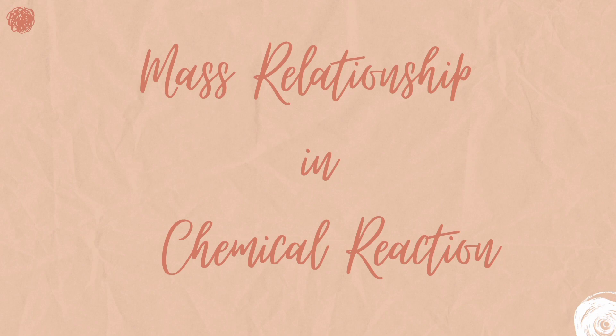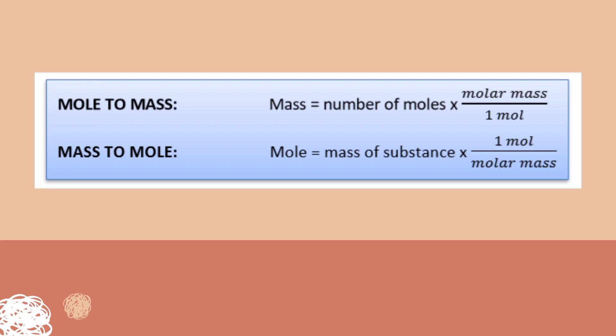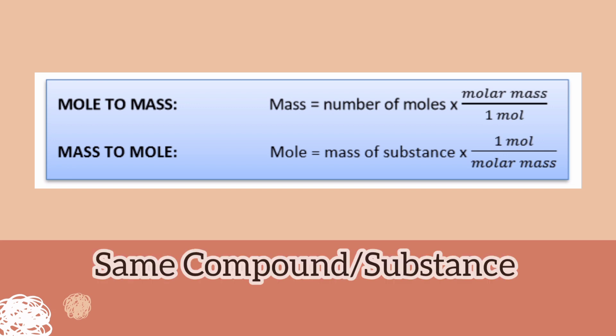Next, we have mass relationships in chemical reactions. We have what we call mole-to-mass conversion and mass-to-mole conversion, and in both we use the molar mass of the substance. For mole-to-mass, we multiply the number of moles by the molar mass. For mass-to-mole, we divide the mass by the molar mass — or equivalently, multiply by the reciprocal of the molar mass. Note that these conversions can only be used for the same compound or substance.